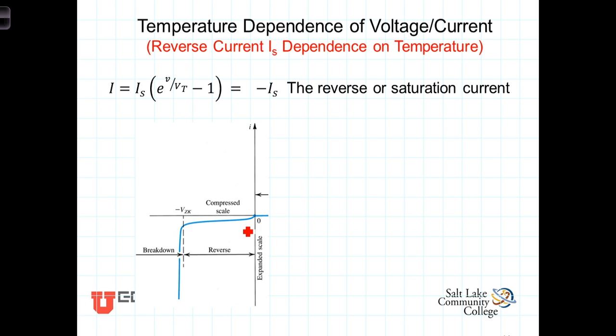In the reverse bias, we know that, generally speaking, the reverse biased current, or the saturation current, is relatively constant over a wide range of voltages. And so our diode equation,